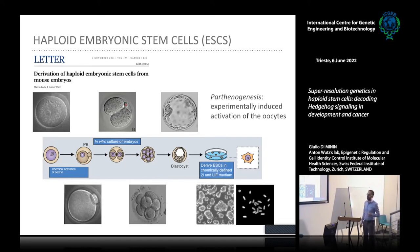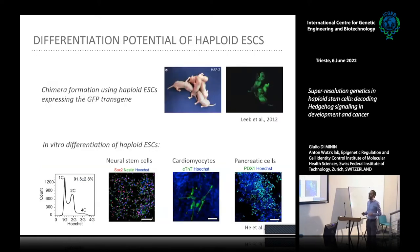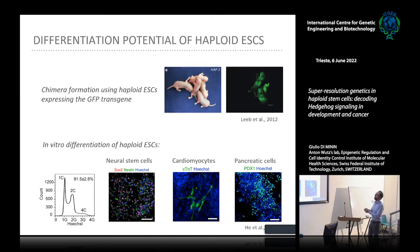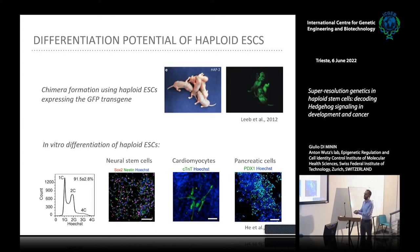We can use this cellular system to perform efficient genetic screening. These haploid embryonic stem cells are still characterized by the same self-renewal and differentiation potential as their diploid counterparts, as nicely demonstrated in chimera experiments where haploid ESCs labeled with GFP are still able to participate in the formation of a novel organism. We can also differentiate haploid ESCs into multiple lineages, such as neuro stem cells, cardiomyocytes, and pancreatic cells, while still maintaining their haploid genome.